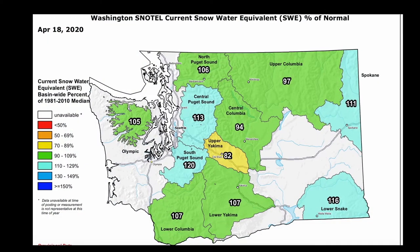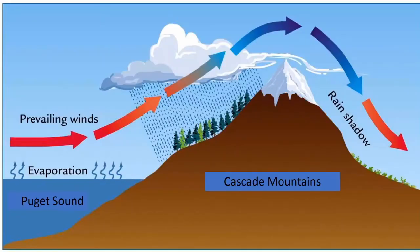This is a map of Washington Snotel current snow water equivalent percent of normal. We see that Yakima Valley is in the yellow zone with an average snow water equivalent of 82%, which is more towards the lower end of the scale. On the other hand, Puget Sound, the light blue zone, has a snow water equivalent of between 113 and 120%. Why is this?